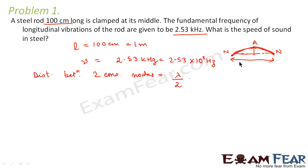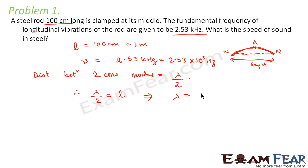According to this question, this lambda by 2 is nothing but the length of the rod. Therefore, we can say lambda by 2 is equal to the length of the rod, so lambda is equal to twice the length of the rod. That is equal to 2 × 1, which is equal to 2 meters.